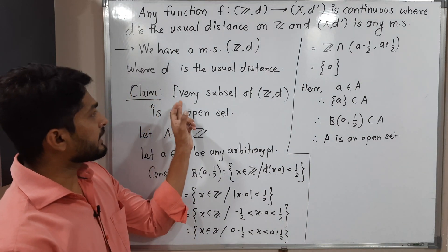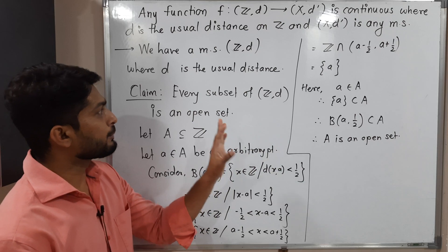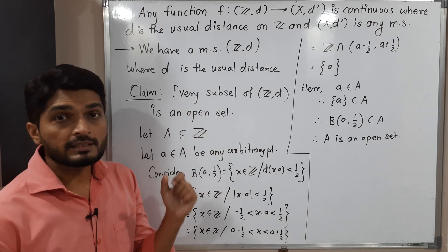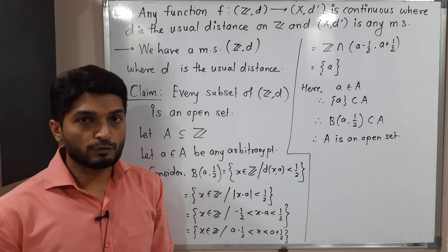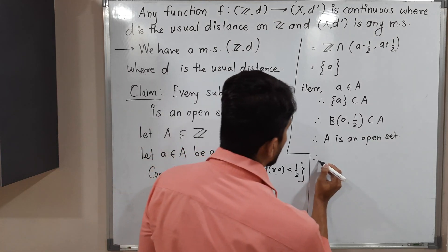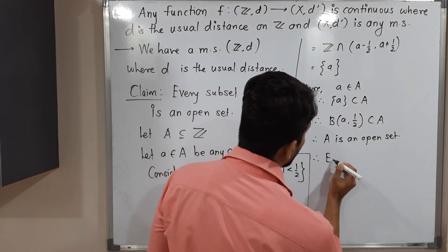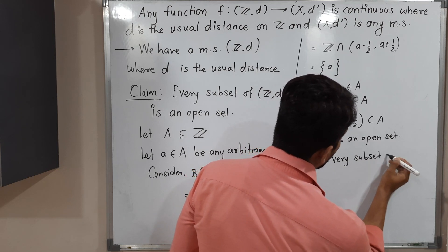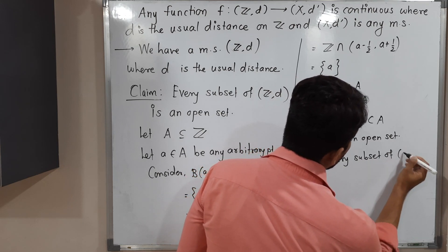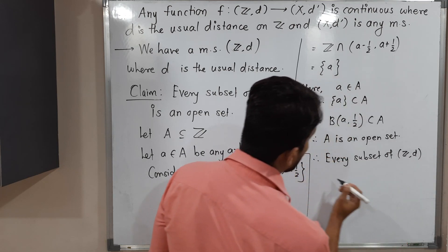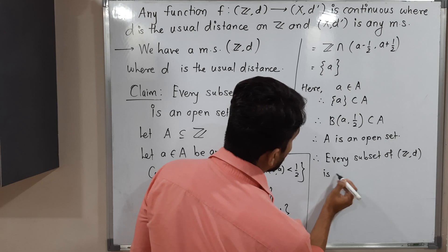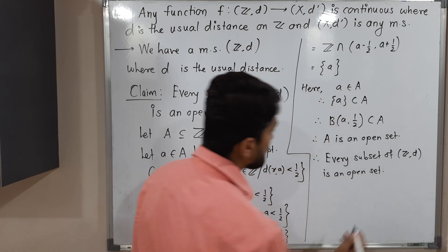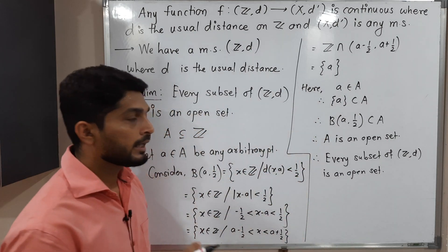Therefore, we have proved: every subset of Z_d, where d is the usual distance, is an open set. Since A was an arbitrary subset of Z, this holds for every subset. In this way we proved our claim.